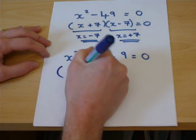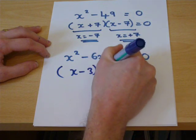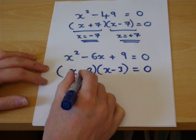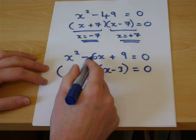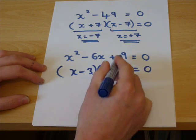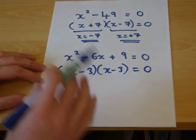Now then, if I put minus 3 and minus 3 in those brackets, minus 3 take away 3 is minus 6. Minus 3 times minus 3 is plus 9. So it's factorized.